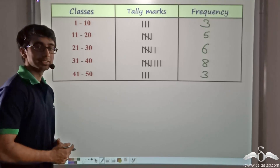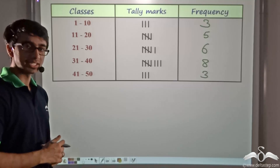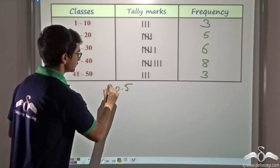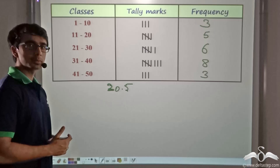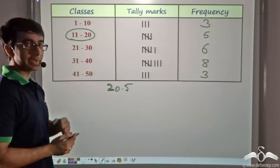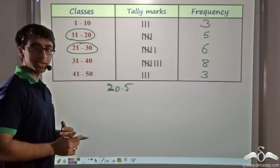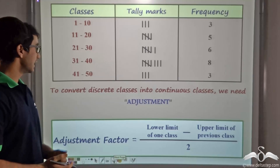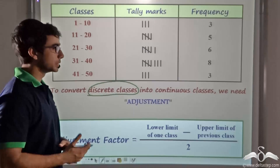Now the teacher faced a slight problem. There was a student who was absent on the day of the surprise test, so this student was asked to take the test later on. The student obtained 20.5 out of 50. Now if you look closely at the classes we have considered, where do we fit in 20.5? We cannot fit it into 11 to 20 because 20.5 is greater than 20, and neither can we fit it into 21 to 30 because 20.5 is lesser than 21. So in this case we need to obtain continuous classes, and to convert these discrete classes into continuous classes, we need to do something known as adjustment.